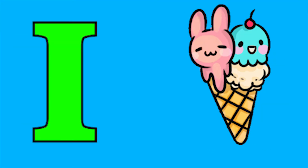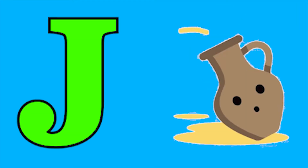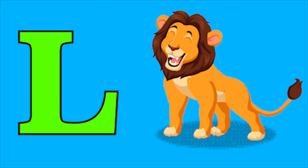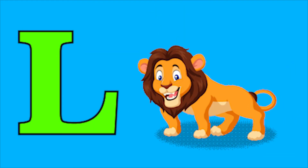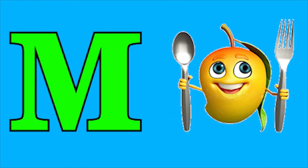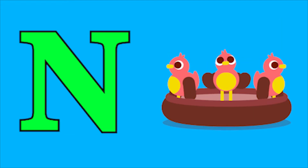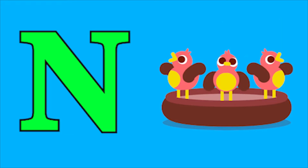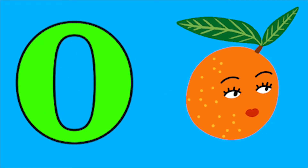H for hen, I for ice cream, J for jack, K for king, L for lot, M for mango, N for nest, O for orange.